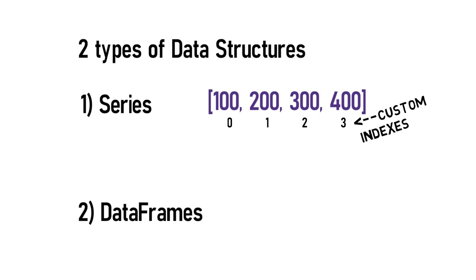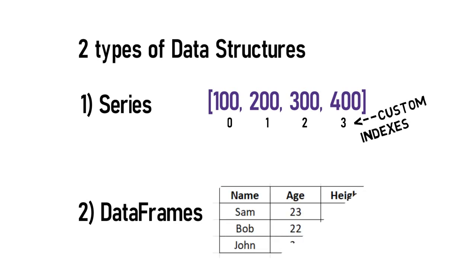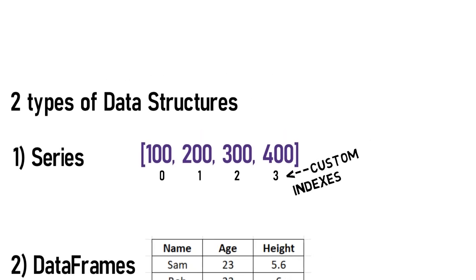Data frame is the most popular data structure of Pandas. Data frames can accommodate the relational or tabular type of data. For example, the data inside an Excel file can be stored in data frames.